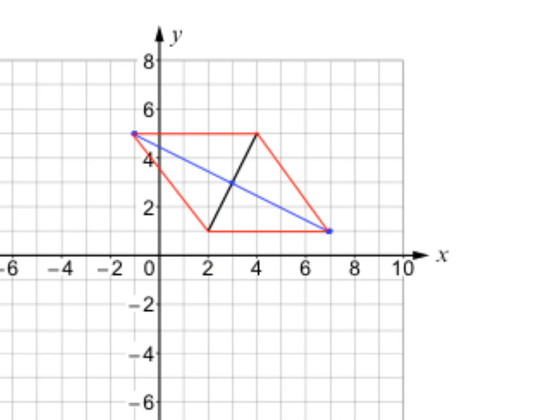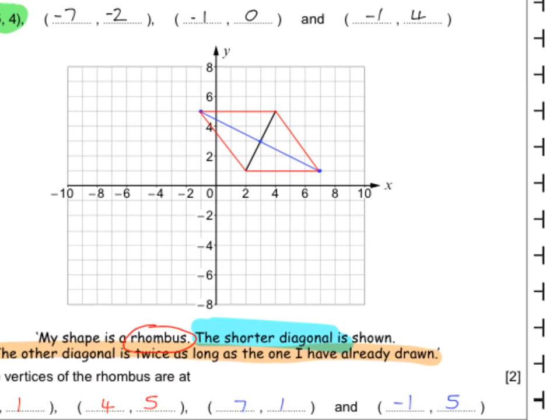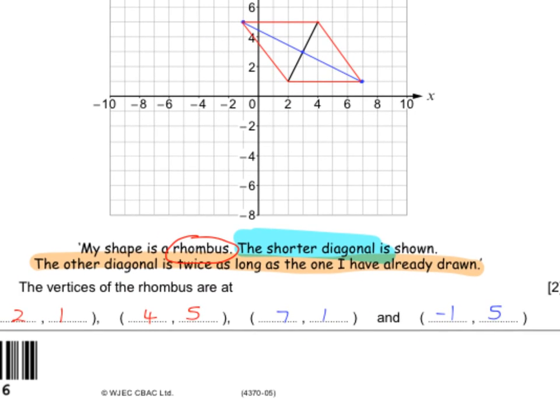For the rhombus, the other coordinates I needed were (-1, 5) and (7, 1), which are the answers given.